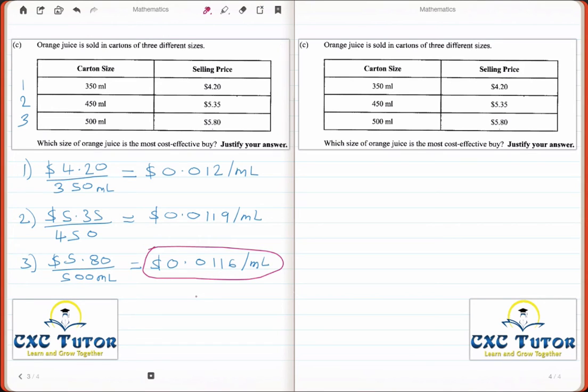Before we close this question, I want to point out there is an alternative way of solving it. In the second method, we could have worked out which juice gives us the most milliliters per dollar. Essentially, we'll be doing the opposite of the first method, where we now divide the amount of milliliters by the selling price.